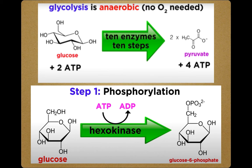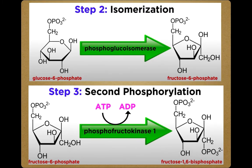The phosphorylation prevents the glucose molecule from continuing to interact with the GLUT proteins, or glucose transporter proteins, and it can no longer leave the cell because the negatively charged phosphate will not allow it to cross the hydrophobic interior of the plasma membrane. In the second step of glycolysis, an isomerase converts glucose-6-phosphate into fructose-6-phosphate. An isomerase is an enzyme that catalyzes the conversion of a molecule into one of its isomers. This change allows the eventual split of the sugar into three-carbon molecules. In the third step, a second phosphorylation of fructose-6-phosphate is catalyzed by phosphofructokinase, and a second ATP molecule donates a high-energy phosphate to produce fructose-1,6-bisphosphate.